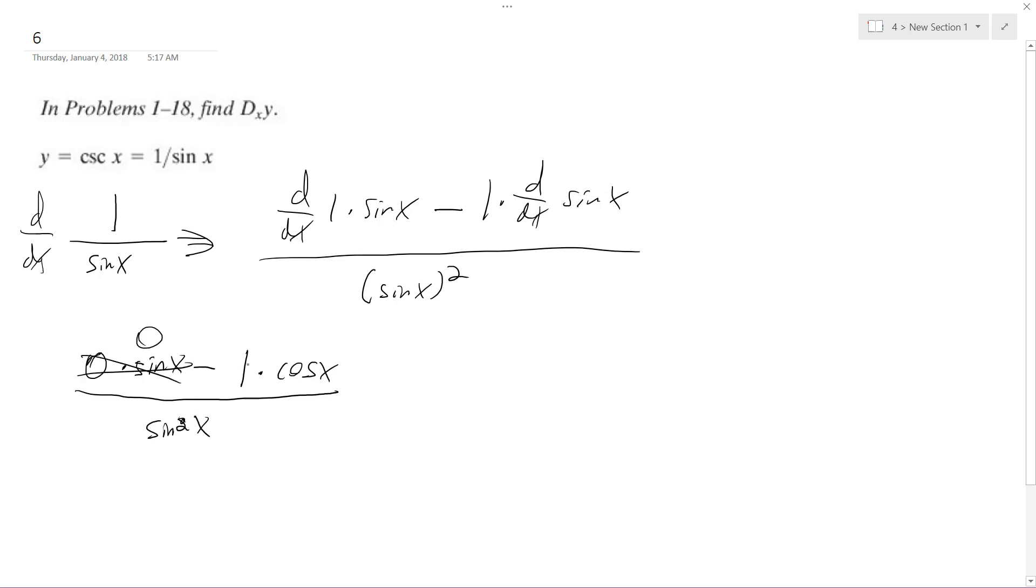this becomes 0, this becomes minus cosine x, so I get minus cosine x all over sine of x, sine of x.